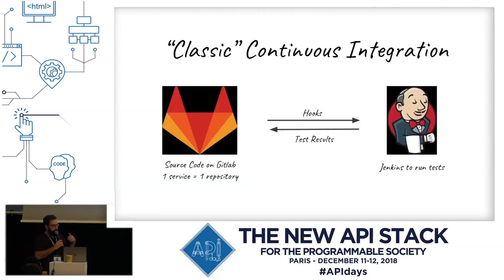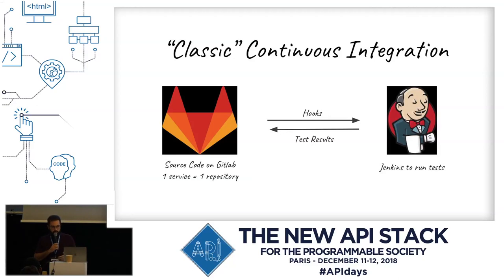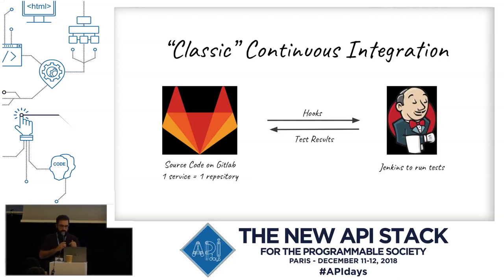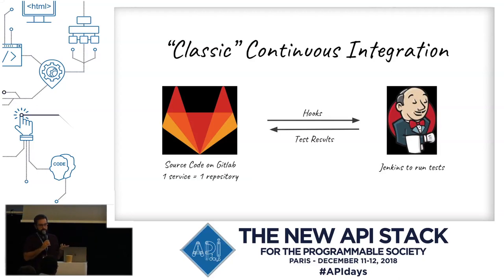When we moved from the monolith to the microservice architecture, we still used classic continuous integration. We used GitLab for source code — each service had its own repository. We configured hooks to trigger Jenkins jobs that ran the tests and gave the result. This is a classic pattern.